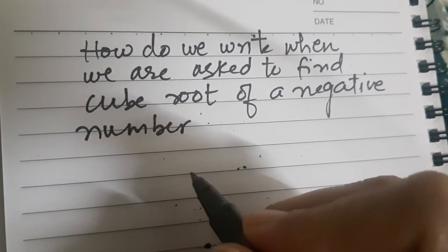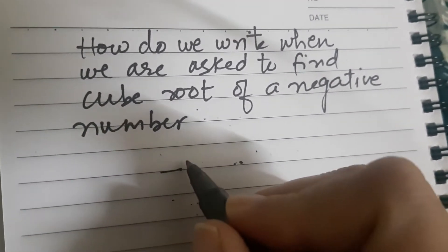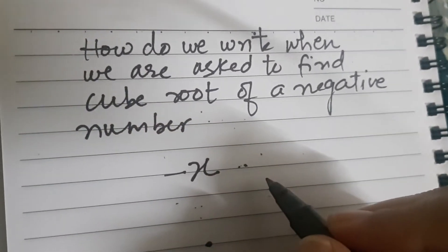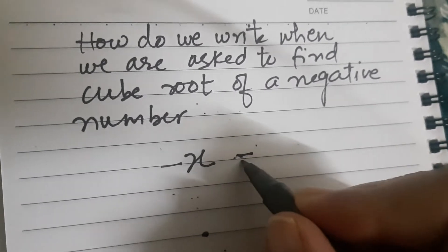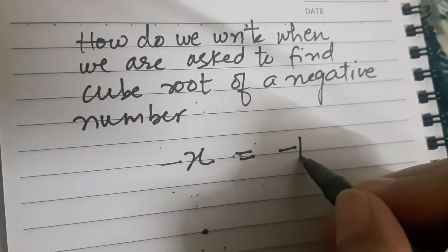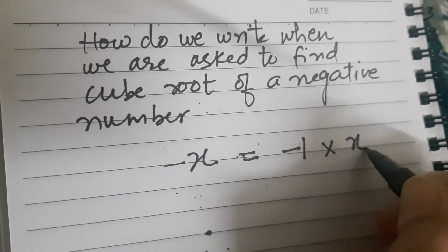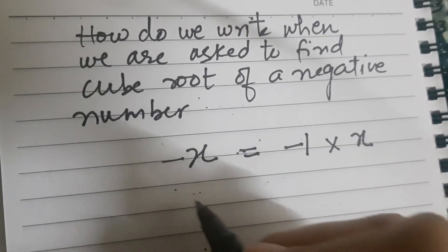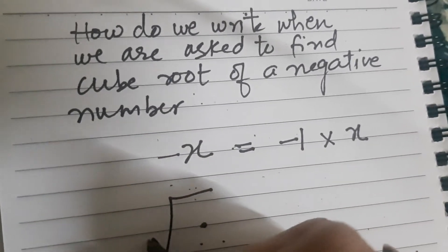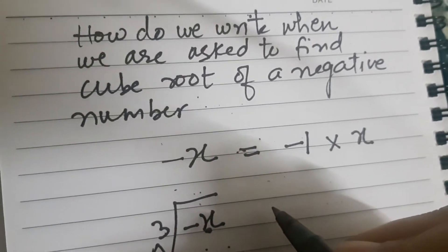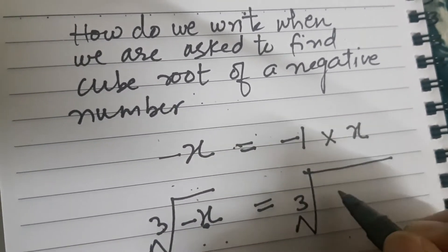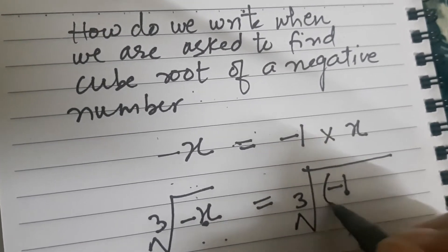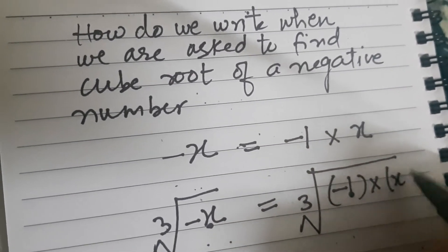Let us take a negative number. Say for example, I am taking minus x. Minus x I can write as minus 1 multiplied by x. Now I have to find cube root of minus x. This means I have to find cube root of minus 1 into x.